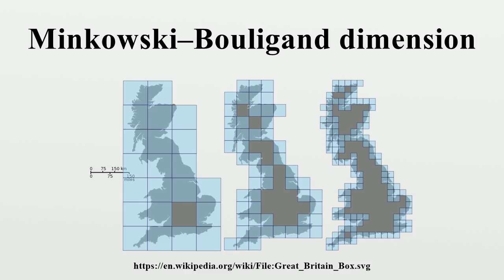However, the definitions are not equivalent. The box dimensions and the Hausdorff dimension are related by an inequality; in general, both inequalities may be strict. The upper box dimension may be bigger than the lower box dimension if the fractal has different behavior at different scales. For example, consider the set of numbers in the interval [0, 1] where all digits between the 2^(2n)-th and 2^(2n+1)-th positions are 0, while digits in odd-place intervals are unrestricted. This fractal has upper box dimension 2/3 and lower box dimension 1/3.